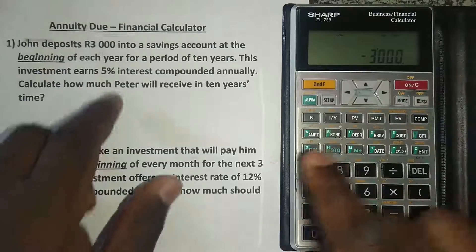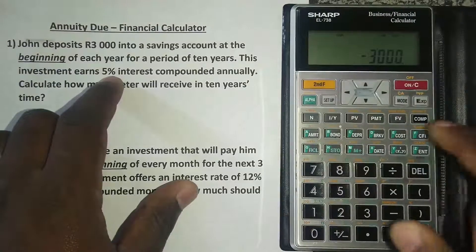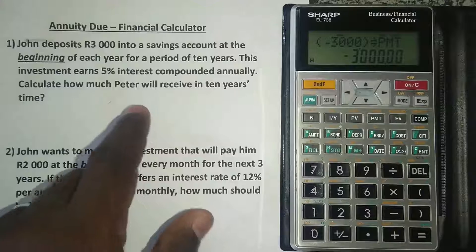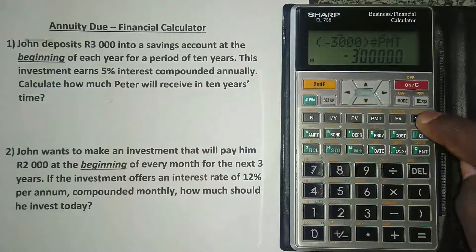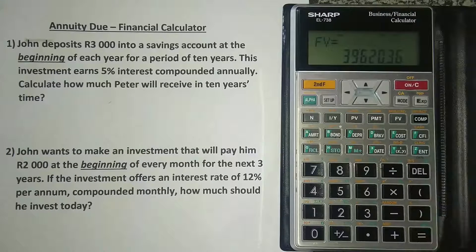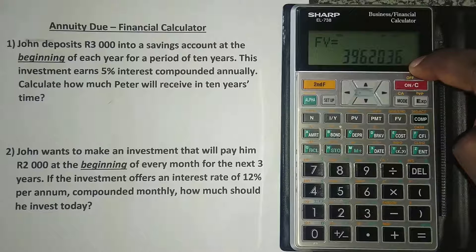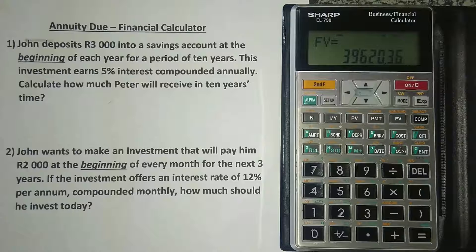Now compute the future value — press COMP and then FV. You can see it has given us the future value. If John deposits 3,000 Rand at the beginning of each year for the next 10 years at 5% compounded annually, he will receive 39,620 Rand and 36 cents. That's how much he'll receive in 10 years' time.